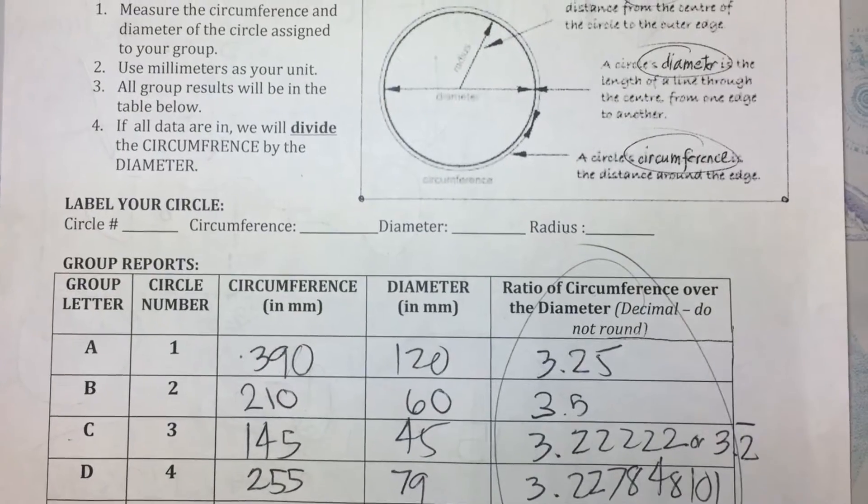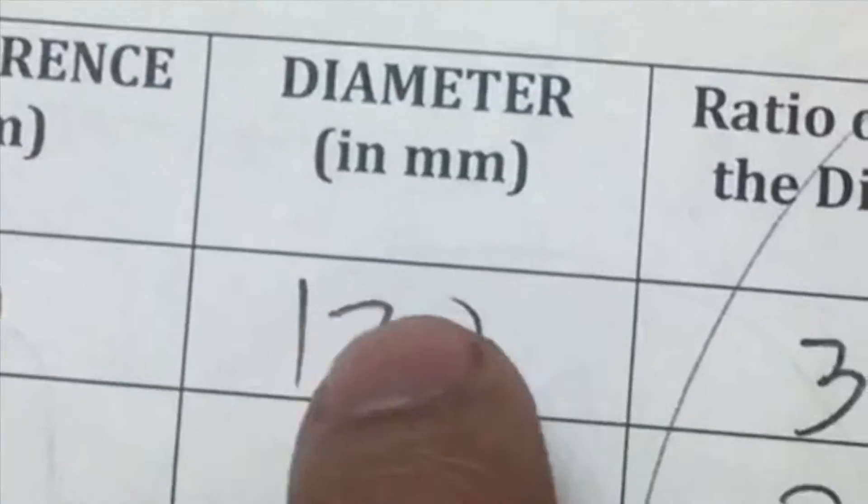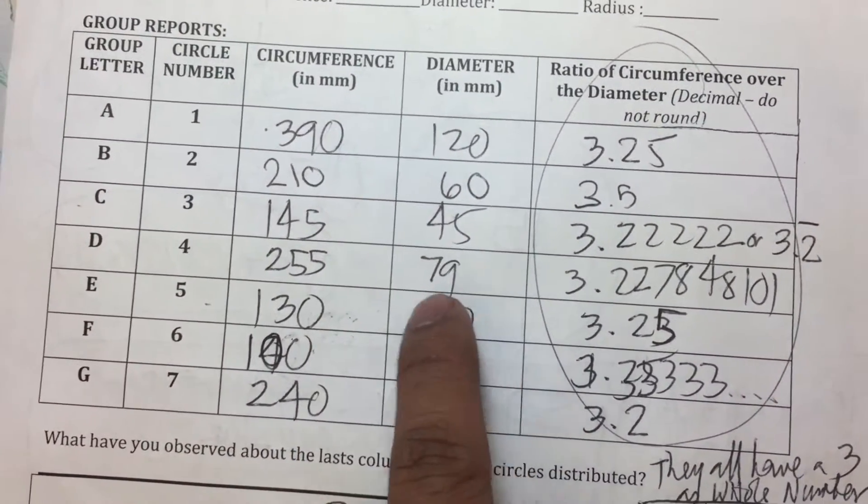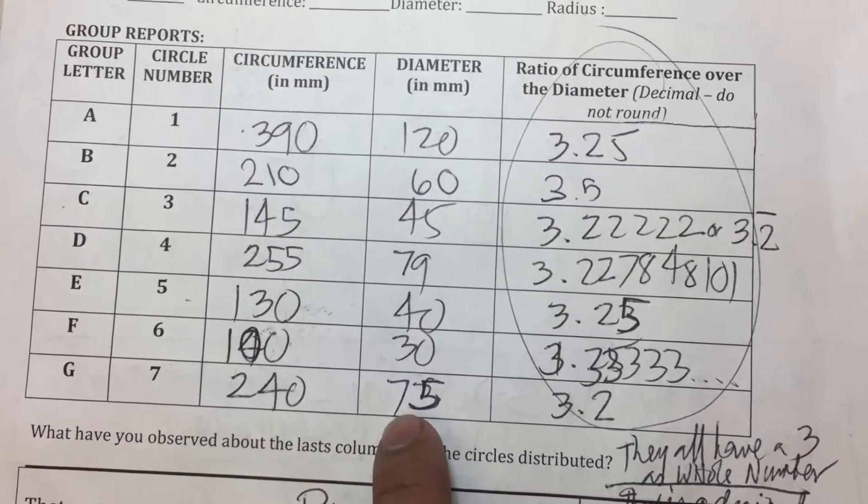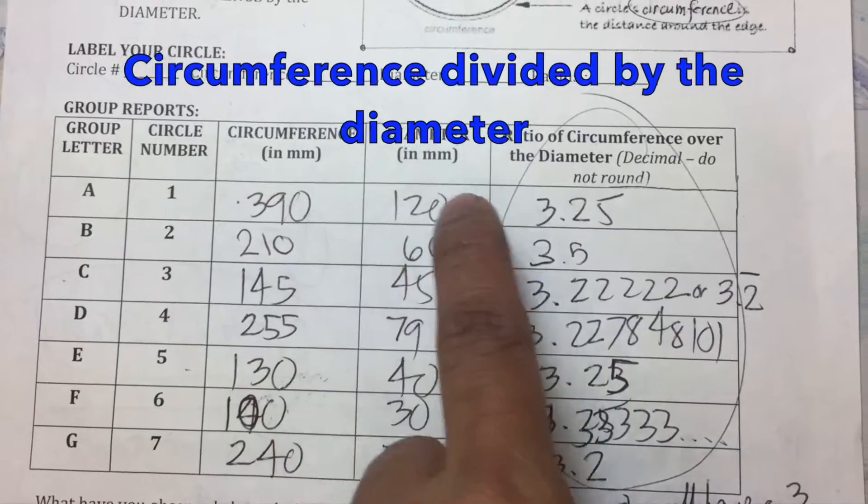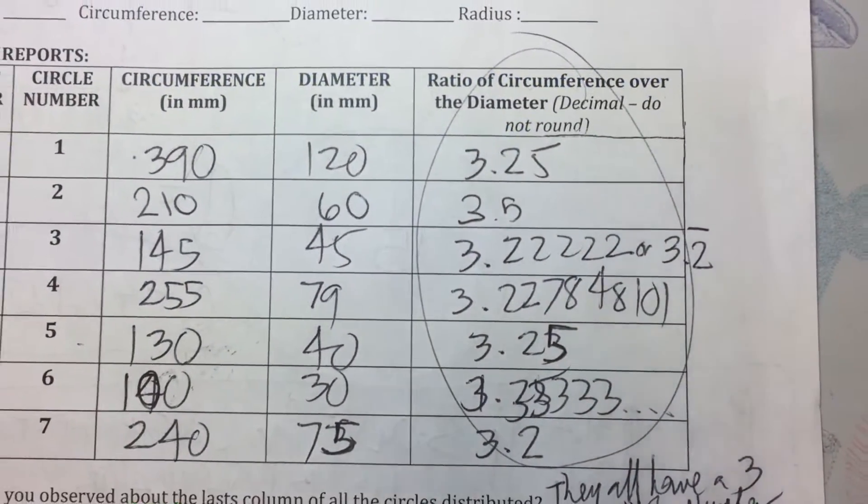Based on the students' results, they got the circumferences and the diameters. These are the circumferences in millimeters and the diameters. They got their calculator and divided the circumference by the diameter. They got all of these results.